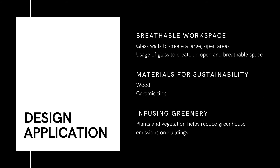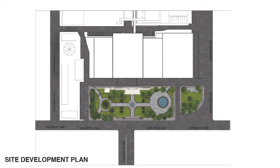For the design application, in creating a breathable workspace, I've used glass walls to create large, open areas, and the usage of glass to create an open and breathable space. I also used sustainable materials like wood and ceramic tiles on different parts of the city hall. For inclusive greenery, I've decided to use plants and vegetation to reduce carbon emissions in buildings. Here is my proposed site development plan. The courtyard features a fountain in the middle, a proposed seating area on the left, and a pond on the right. I removed some circular elements from the previous design to create blue spaces and made seating adjustments and pathways for more human interaction. It is a simple yet clean design.